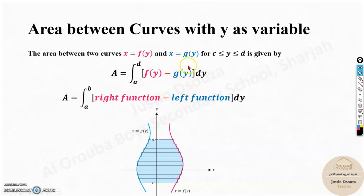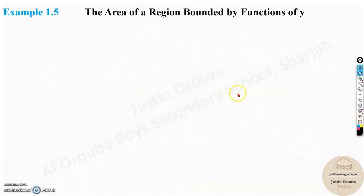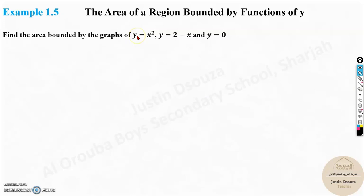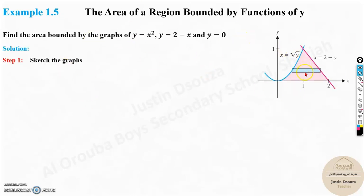The lower limit is c and upper limit is d on the y-axis. Let's solve a problem. This is the same graph we sketched in the previous video. The same problem — but now we solve it with respect to y. If we consider with respect to y, we have a right function and a left function, so we don't need to split the integral into two parts as we did with x.